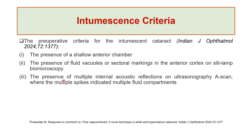In addition, the presence of multiple internal acoustic reflections on A-scan — these multiple spikes indicate multiple fluid compartments. In Intimacy and Cataract, usually you cannot see the back of the eye, so you need to assess the retina using B-scan to check for any masses, detachment, or other pathology. And when you see multiple spikes on A-scan, representing multiple internal acoustic reflections, these indicate the presence of fluid vacuoles confirming that this cataract is intumescent.